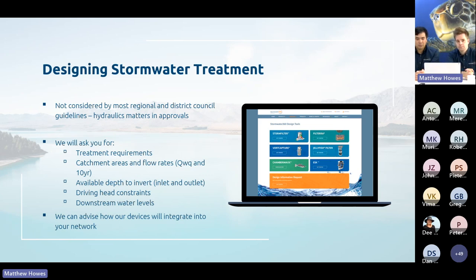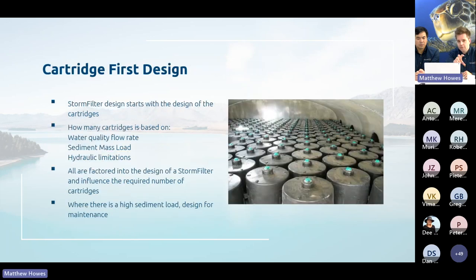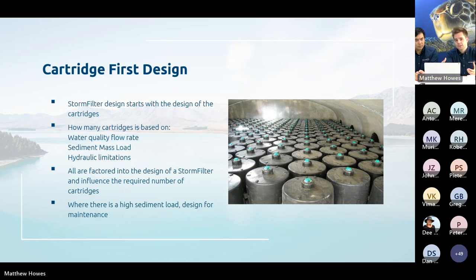We can advise how our devices will integrate into your network, so it's really important to reach out during the design phase — more information is in our hydraulics webinar. With the Storm Filter, we always start with the cartridges first, not the manhole size. We look at the water quality flow rate, whether hydraulic limitations mean we need 46cm rather than 69cm cartridges, and whether there is an increased sediment mass load that means we need more cartridges to avoid onerous maintenance. All of that feeds into how many cartridges are needed.